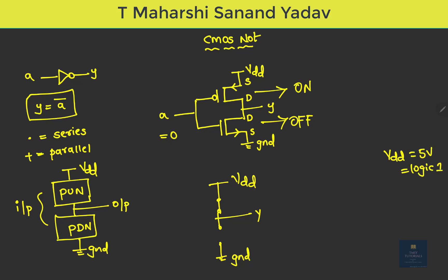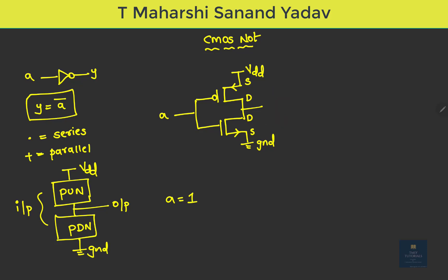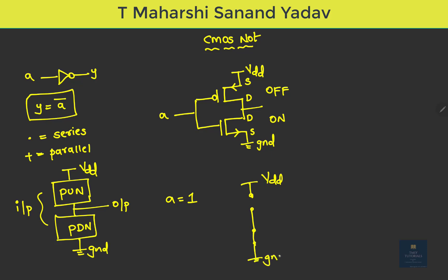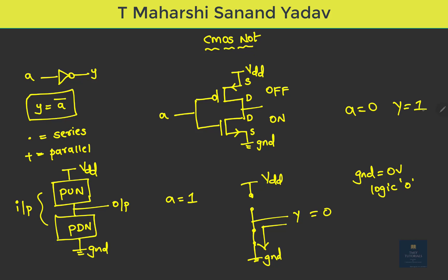When A = 1, the PMOS is OFF and the NMOS is ON. The PMOS is open circuited and the NMOS is short circuited, connecting the output Y directly to ground, which is 0 volts or logic 0. So when A = 1, the output is 0. This matches the truth table of a NOT gate: input 0 gives output 1, and input 1 gives output 0.